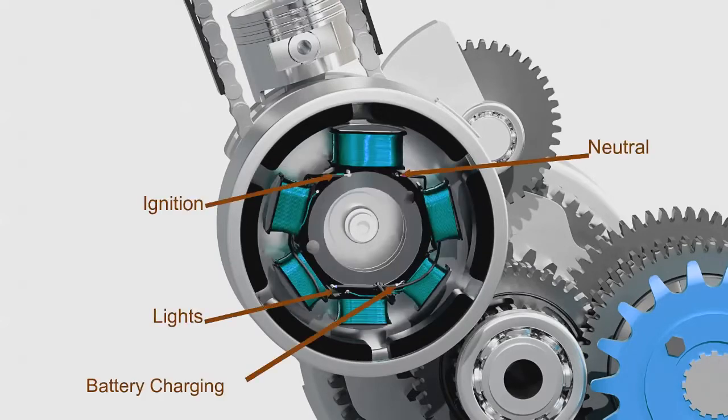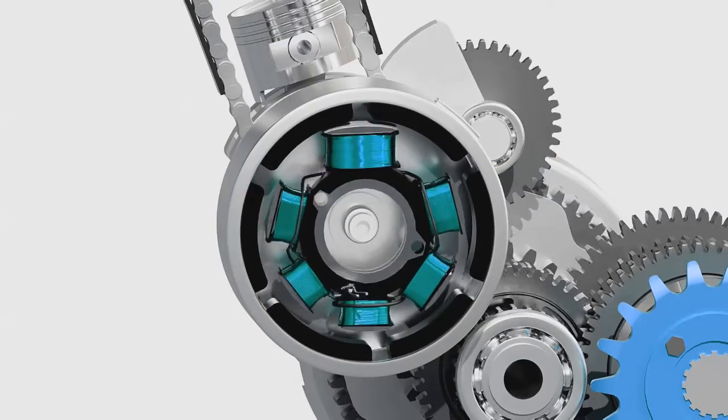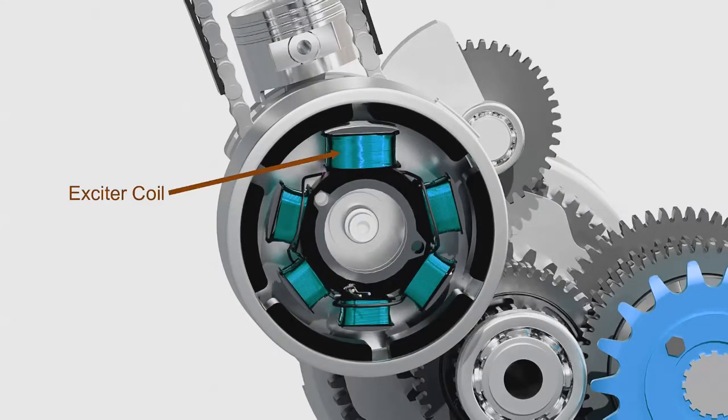Each output from the stator has different purposes, as shown here. The output for the ignition purpose is received from the exciter coil. This coil has a denser winding of thinner wire than the other coils to produce higher voltage for the ignition.